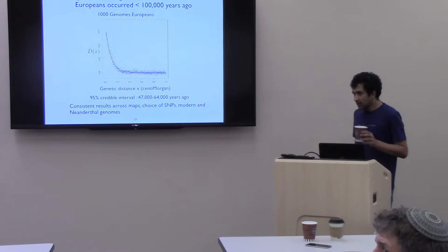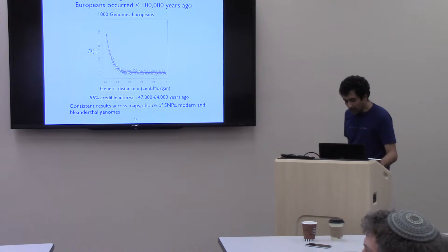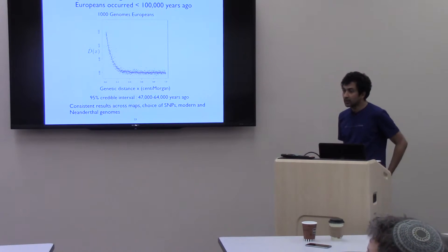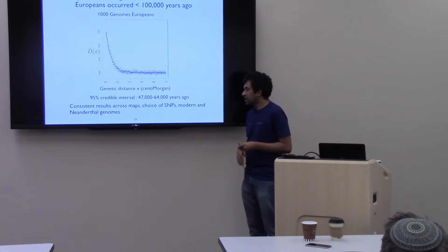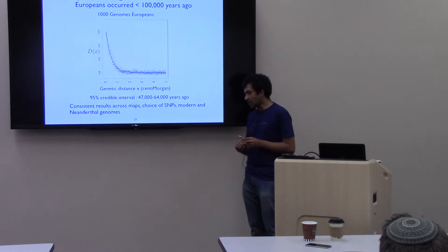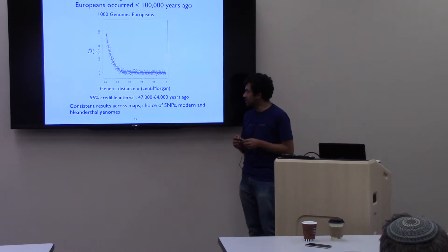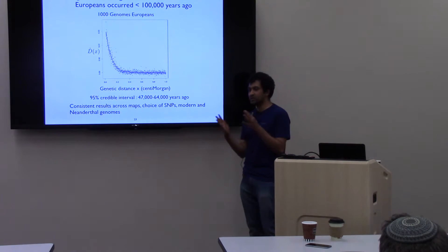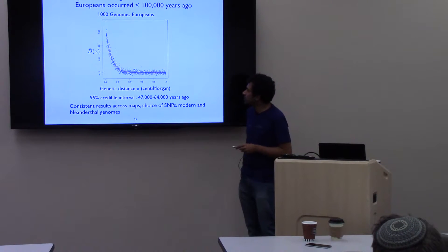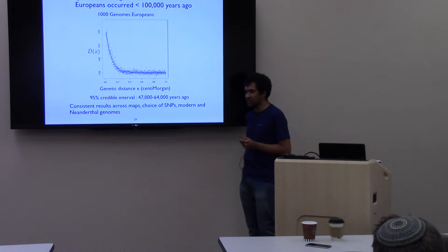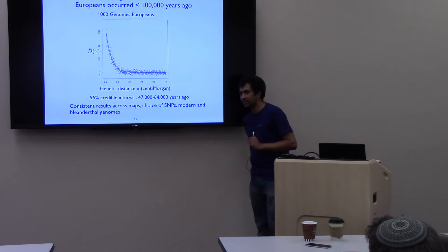Question: Did you run it with Africans? Answer: Yes. You get a very old estimate — roughly consistent with the split times of human and Neanderthal populations, around 8,000 to 10,000 generations, which is about 200,000 years. It's hard to interpret exactly what that means, but it is approximately consistent with that split time.